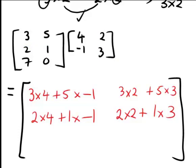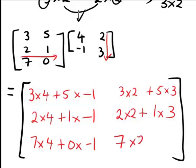And for the third row, first column element, that will become 7 times 4 plus 0 times negative 1. And finally, the third row, second column element, will be 7 times 2 plus 0 times 3.